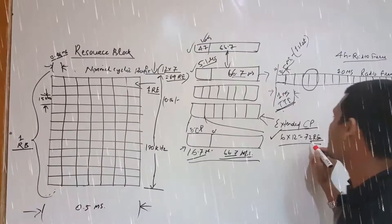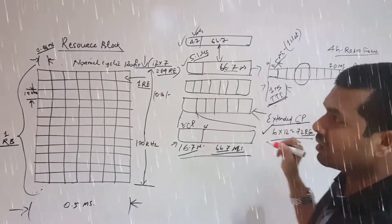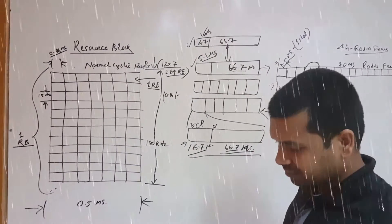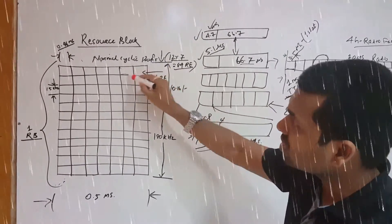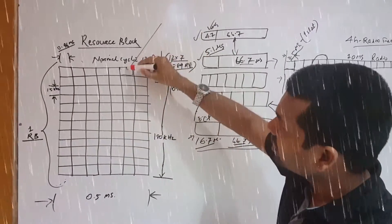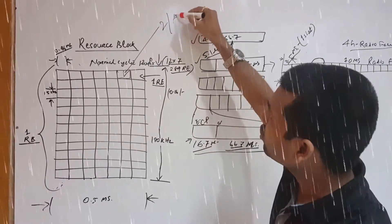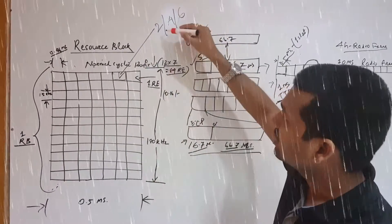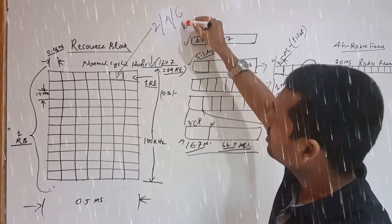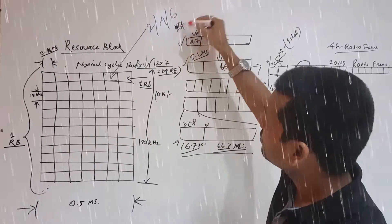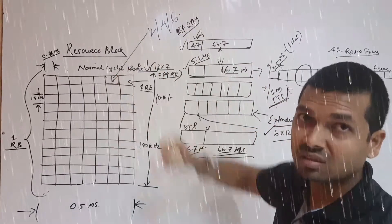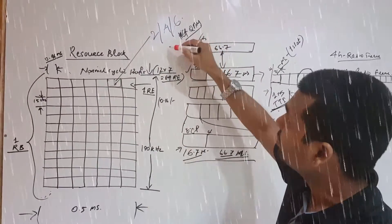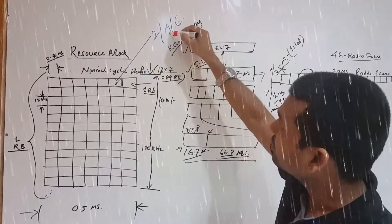Then the modulation is per resource element. Per resource element it may be 2, 4, or 6 bits. That is, if 64 QAM, then it would be 6 bits per every symbol. If it is 16 QAM, then 4 bits. For lower modulation it would be 2 bits.